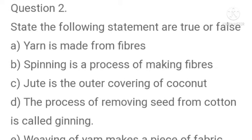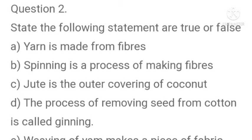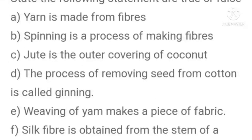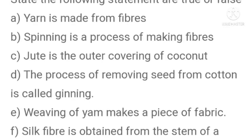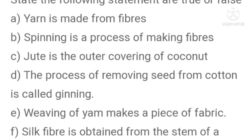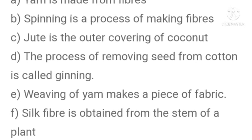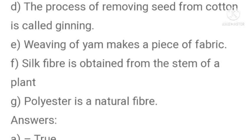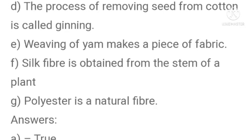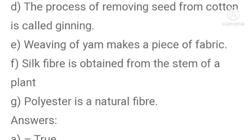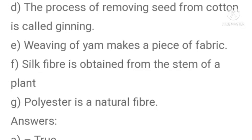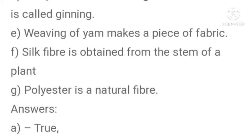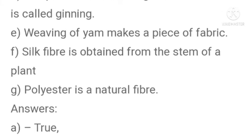Question number two: State whether the following statements are true or false. A yarn is made from fibers — true. Spinning is a process of making fibers — false. Jute is the outer covering of coconut — false. The process of removing seed from cotton is called ginning — true. Weaving of yarn makes a piece of fabric — true. Silk fabric is obtained from the stem of a plant — false. Polyester is a natural fiber — false.